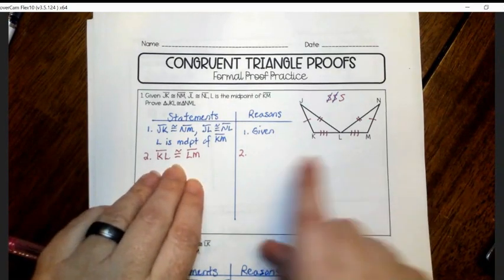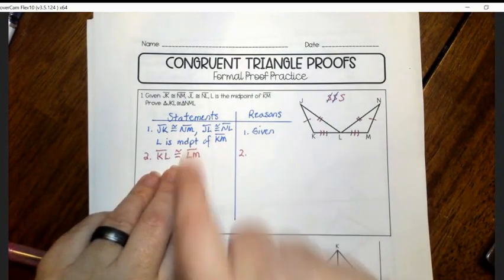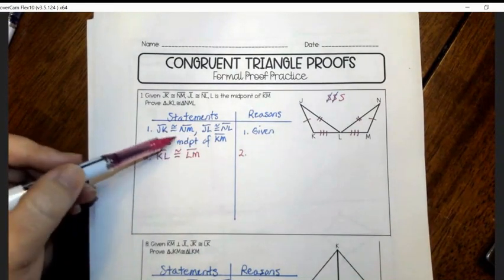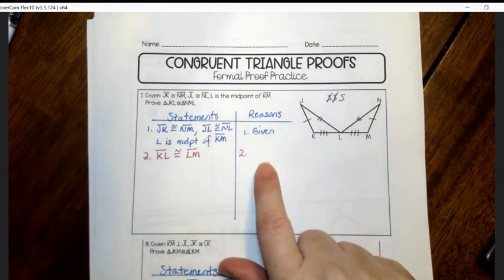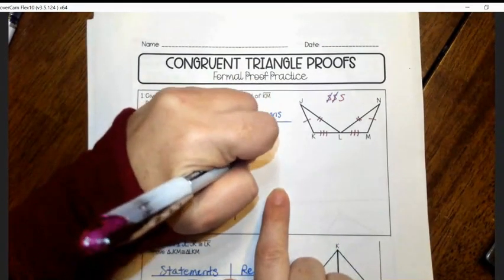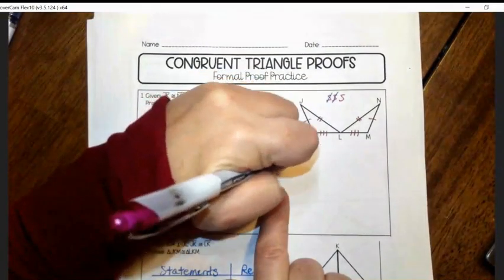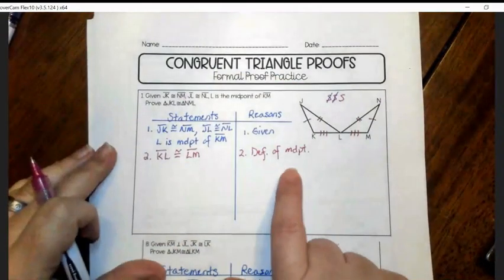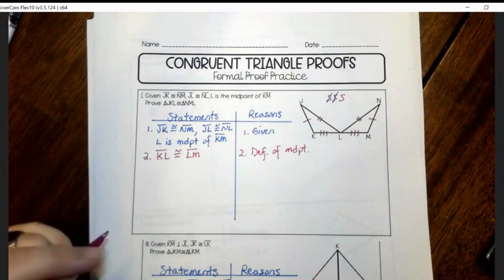So we know that these two sides are congruent because of this line. Because L is the midpoint. I told you in a previous video that if there's a word, a geometric word in the given information, your next step is usually the definition of that word. And that's what's happening here. So those two are congruent because that's what it means to be a midpoint. So definition of midpoint. And feel free to abbreviate as long as I can figure out what you're trying to say.